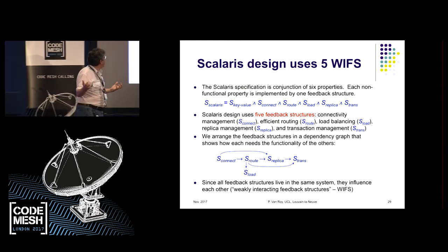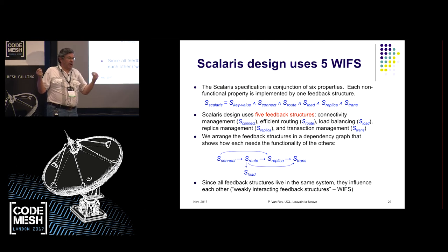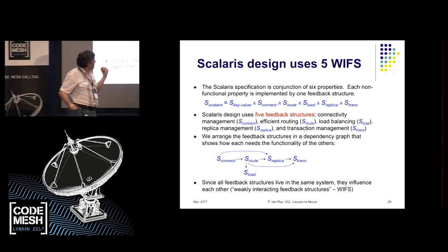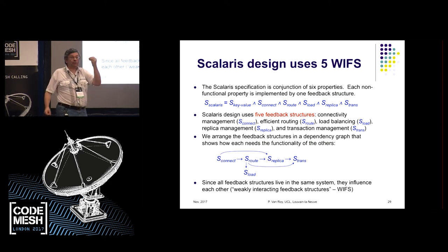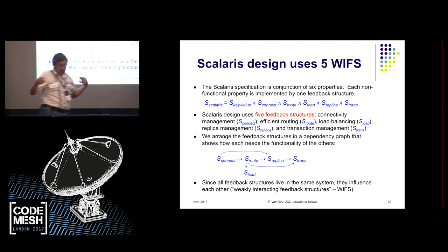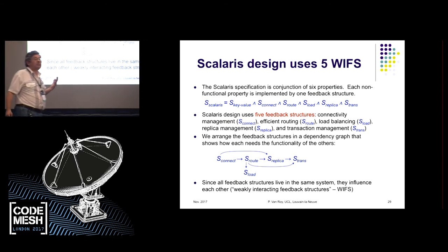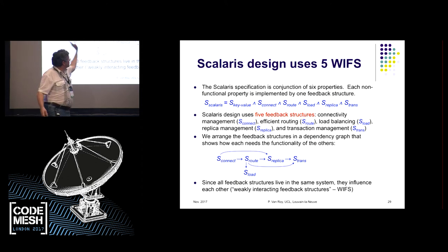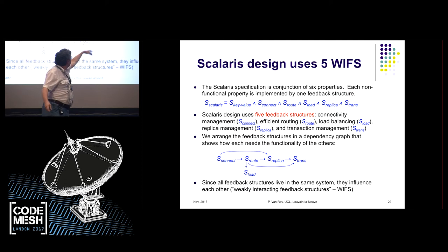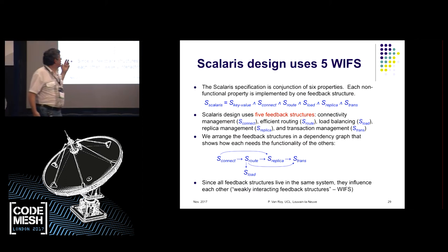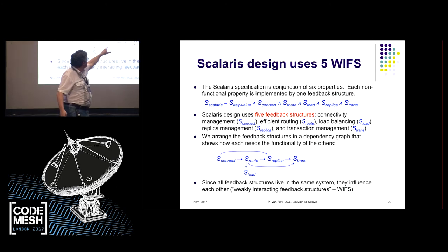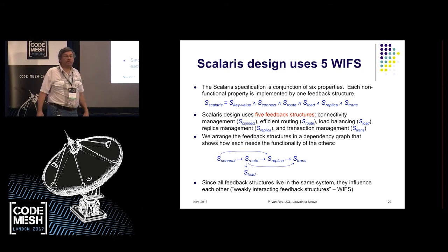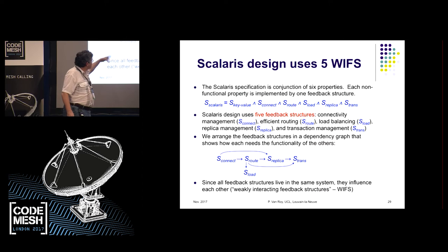These five pieces of the specification are each maintained by a feedback structure in the system, depending on what happens in the environment. Connectivity, for example, detects when a node crashes and does something. The routing creates 'fingers' for efficient routing and adapts to failed or new nodes. There's a dependency: all of them depend on connectivity — if connectivity disappears, they all disappear. But if transaction management disappears, the rest still exists. These five feedback structures are designed independently, starting from the more primitive ones like connectivity and building up to transaction management.